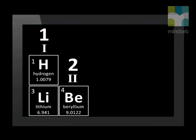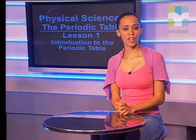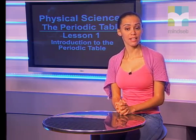Next we have beryllium with atomic number 4. Its symbol is capital B, lowercase e. Capital B alone is the symbol for the next element, boron, which has an atomic number of 5. Note that the atomic number of the elements increases as we work across the row and down the periodic table.